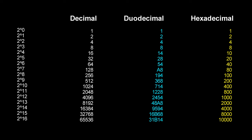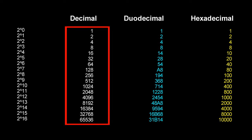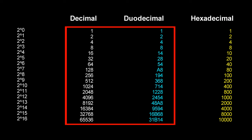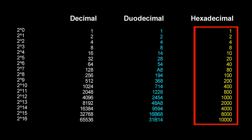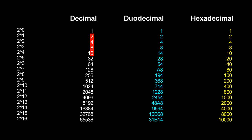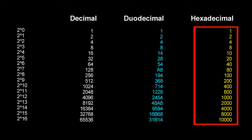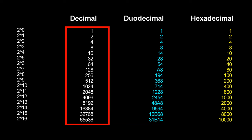This is what happens if you keep doubling one in decimal, duodecimal and hexadecimal. You have probably seen some of these numbers in decimal before. In decimal and duodecimal the numbers are very messy. However in hexadecimal the first digit goes 1, 2, 4, 8 and just adds an extra zero each time it changes to one, so you always get nice round numbers. In decimal the last digit goes in a repeating pattern of 2, 4, 8, 6. In duodecimal the last digit goes in a repeating pattern of 4, 8. So for doubling one, hexadecimal is the best, followed by duodecimal, and decimal is the worst.